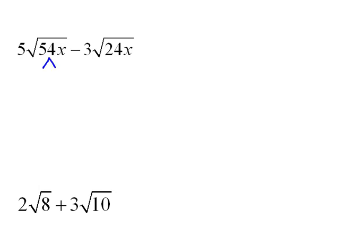And in fact, 54 we could rewrite as 9 times 6. So I could rewrite that as 3 times the square root of 6x. Don't forget we had that 5 on the outside. So really, that term simplifies into 15 square roots of 6x.